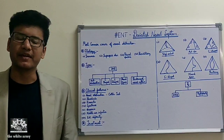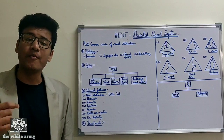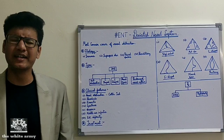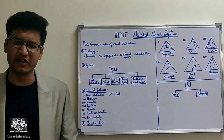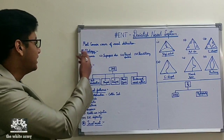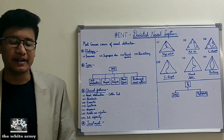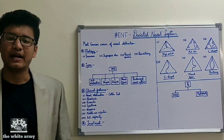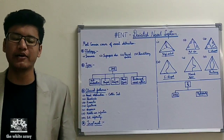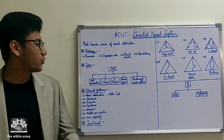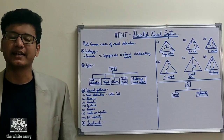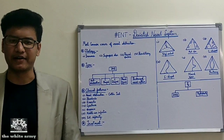Deviated nasal septum is the most common cause of nasal obstruction. There are many etiologies for DNS: trauma, improper development, racial factors, and hereditary factors.